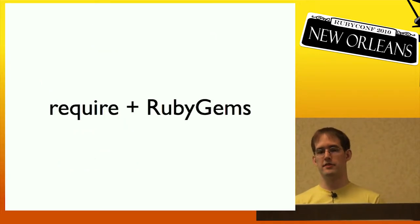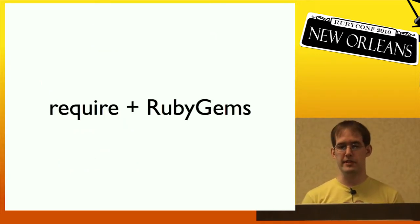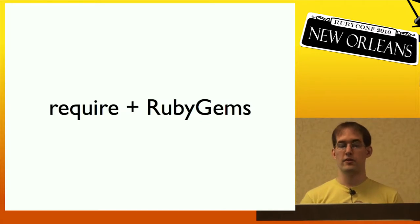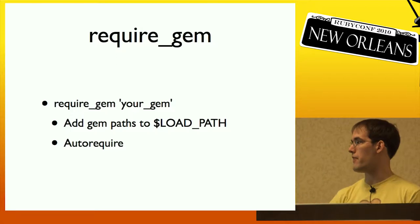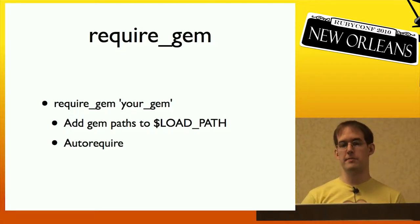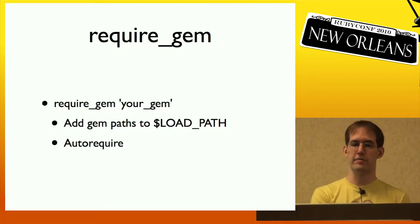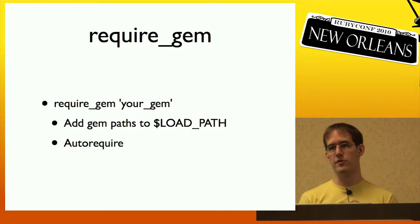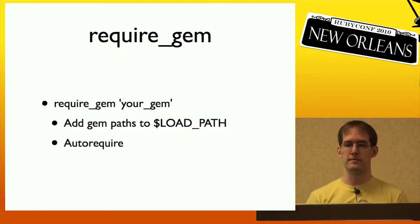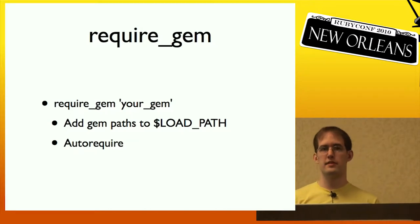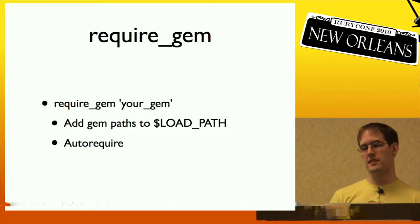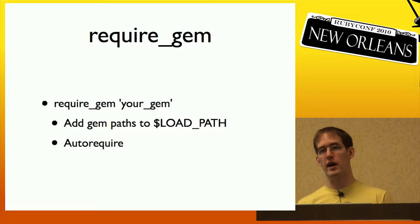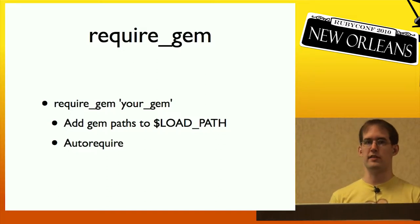How RubyGems integrates itself with Ruby has probably changed the most. Originally you would use require_gem. So when you called require_gem on some file, it would add all the gem's paths to Ruby's load path, and if you had an auto-require listed in your gem spec, it would automatically require that file for you. But this didn't work like require, because it's nicer to just be able to require stuff and have it load regardless of whether it's built-in or from RubyGems.